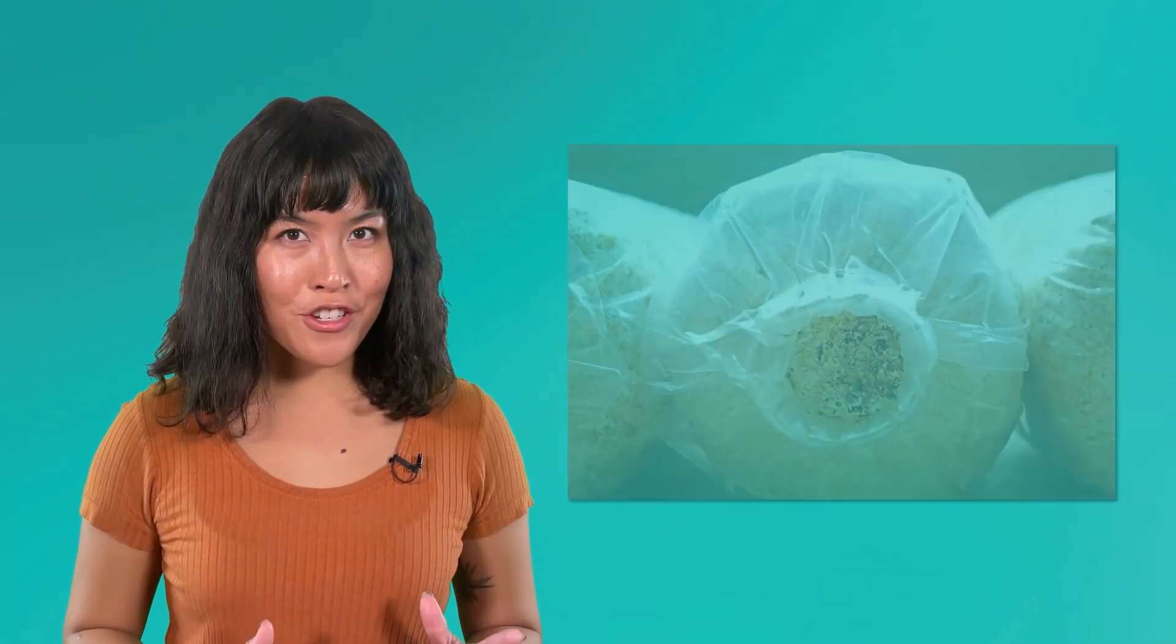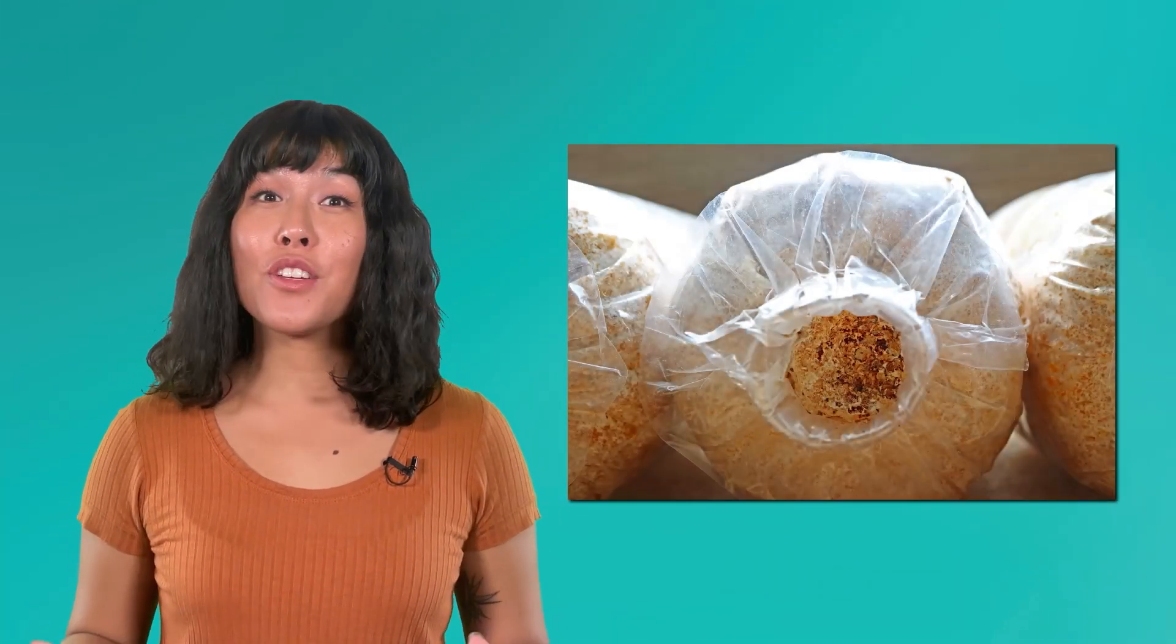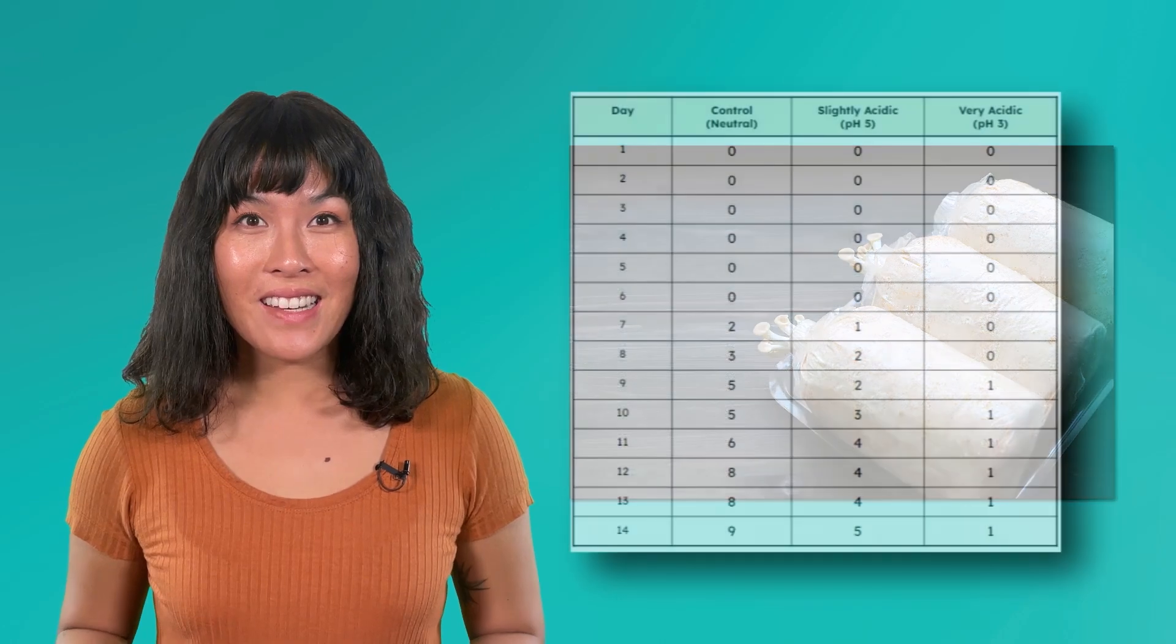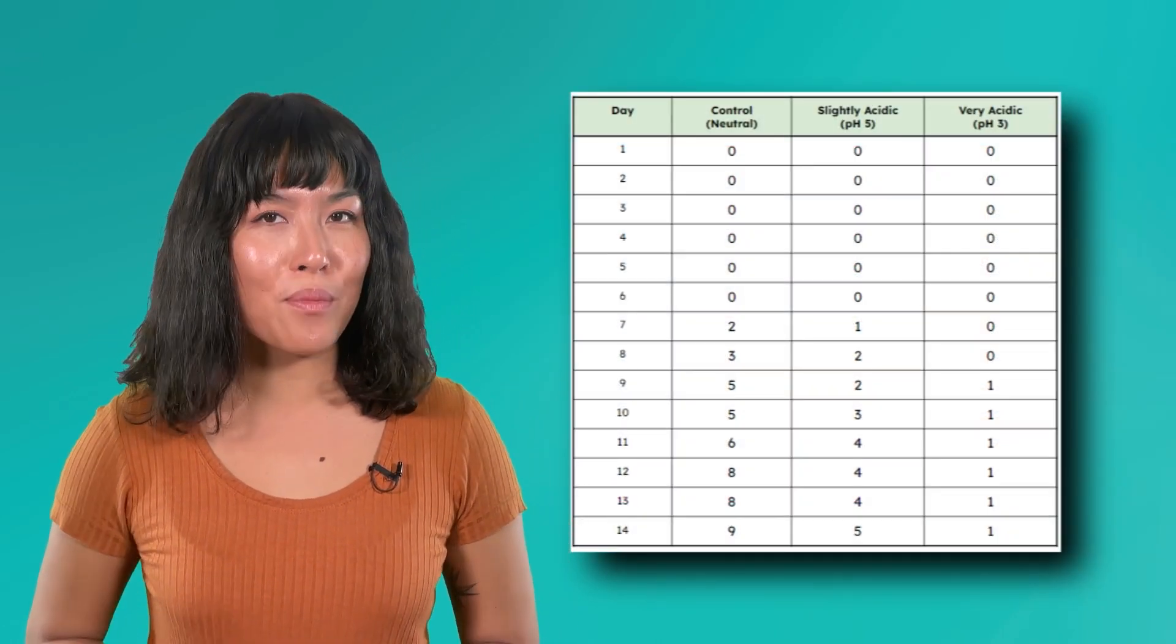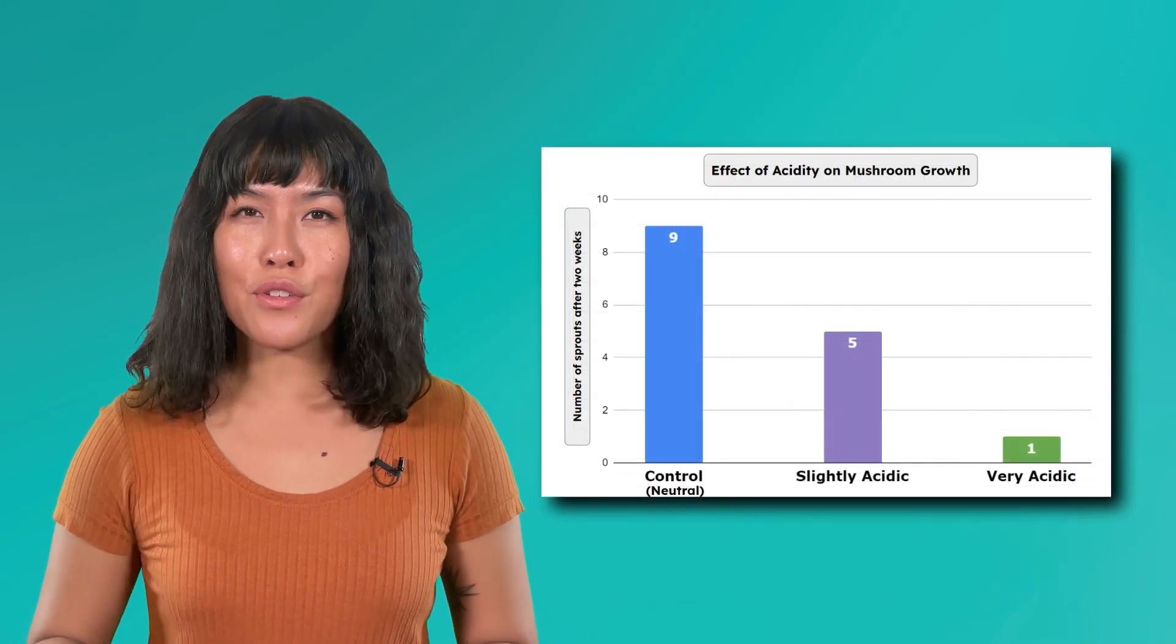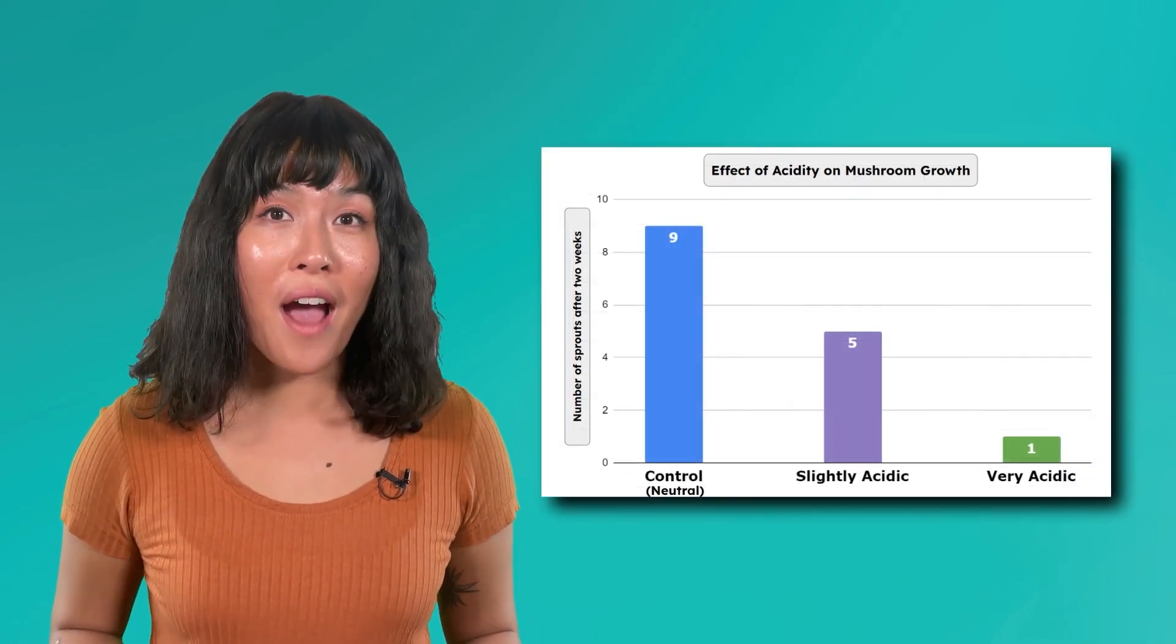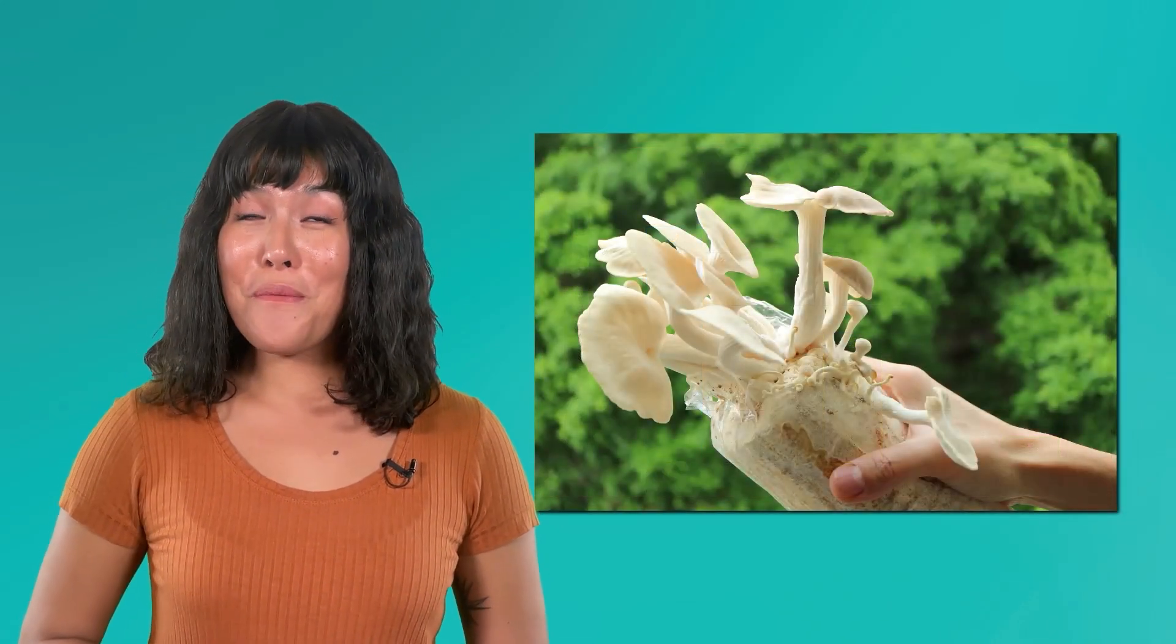Then it was time to watch and wait. I continued watering the spawns each day with their designated type of water. After a week, I began to see my first mushroom sprouting. Each day, I counted how many had sprouted and recorded this in my data table. After two weeks, I used my final results to make a graph. Looks like I'm a mushroom farmer now!